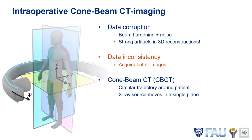Looking into CBCT, a classical CBCT scan is acquired on a circular trajectory around the patient, visualized on the left side of the slide, where the phi direction is the direction of movement of the C-arm. The X-ray source therefore moves in a single plane. We can now extend that trajectory by another degree of freedom, the out-of-plane angle theta. By optimizing the out-of-plane angle theta for every acquired image, it's possible to acquire better images and therefore reduce this data inconsistency.